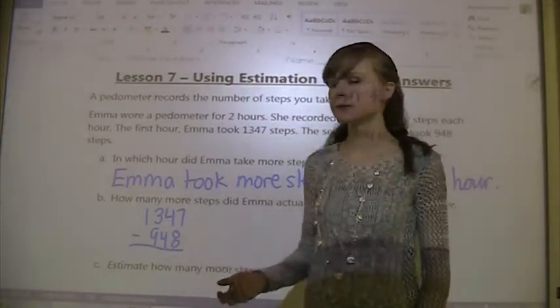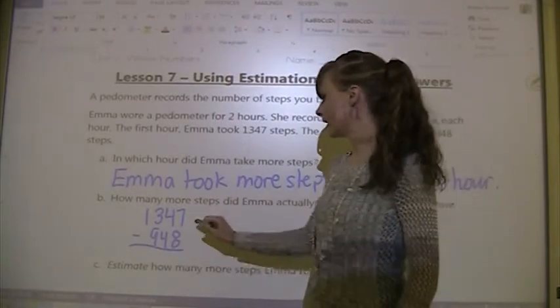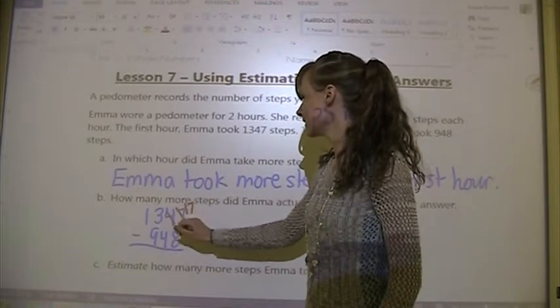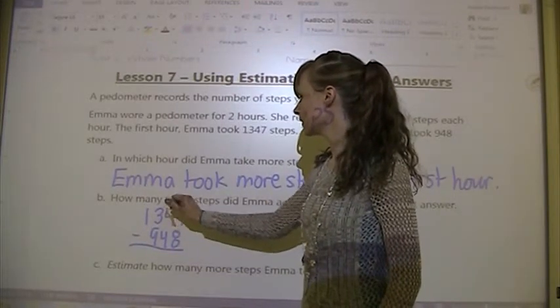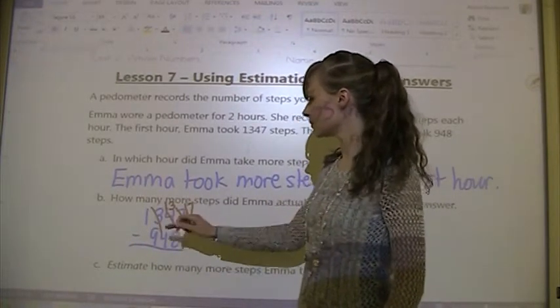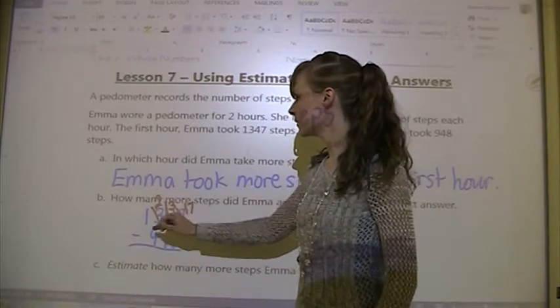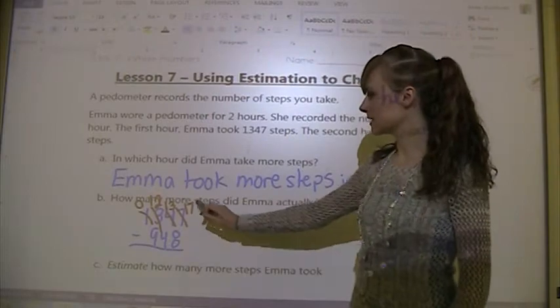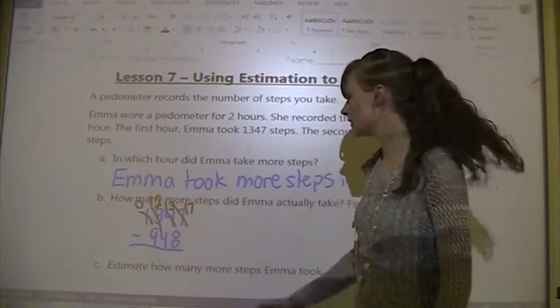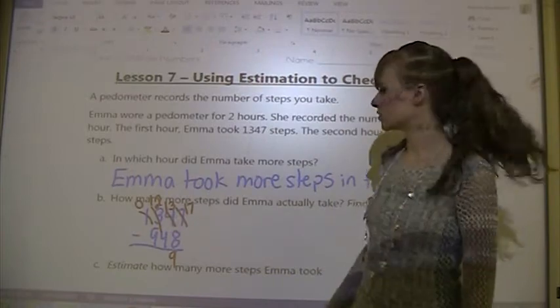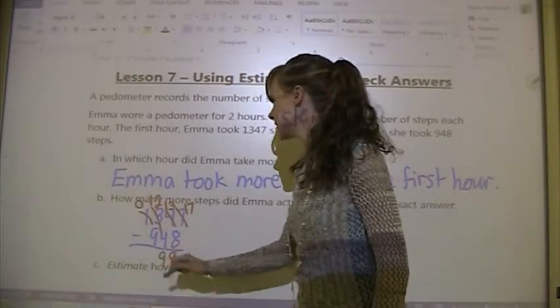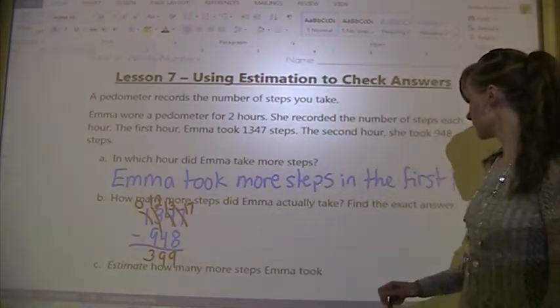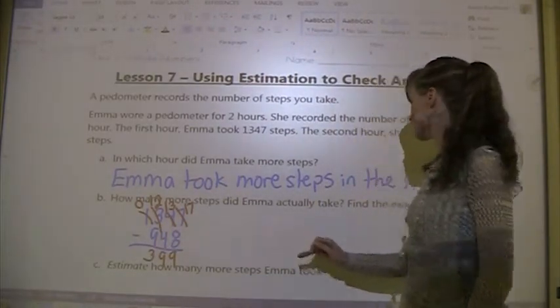Now we need to subtract and we're going to have to do a lot of borrowing. So this is going to turn into 17, this is going to turn into a 3, but then it needs to turn into 13 because 4 is bigger. Then this turns into a 2 and then this turns into a 0, and there's a 12. So we've got 17 minus 8 to begin with, which is 9. We've got 13 minus 4, which is 9, and we've got 12 minus 9, which is 3.